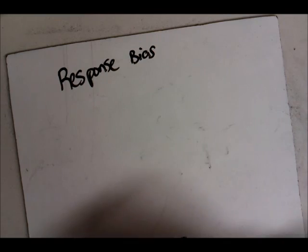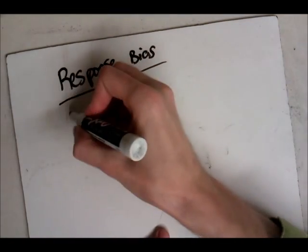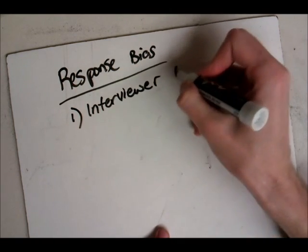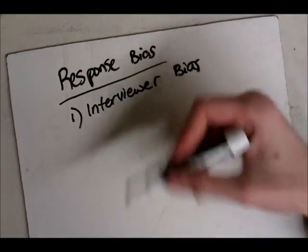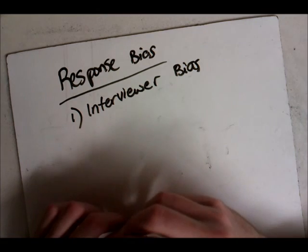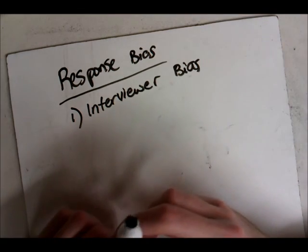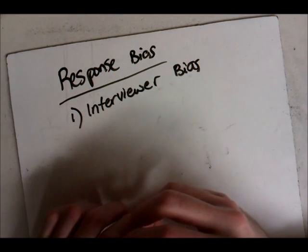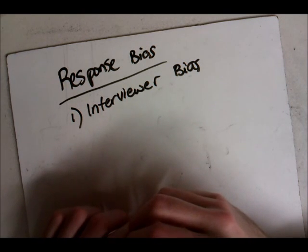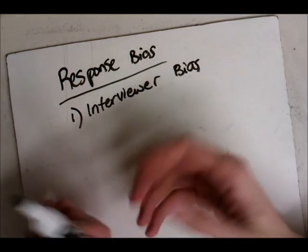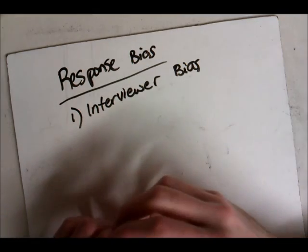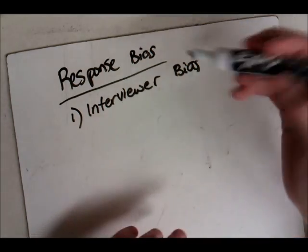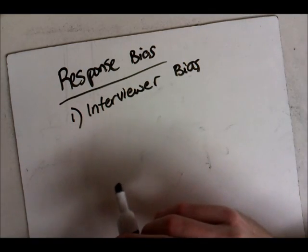Two of the biggest ones here would be interviewer bias. This is where the person who is giving the survey might cause the results to go one way or the other. For example, if your boyfriend or girlfriend is asking you, would you ever cheat on me? Well, obviously, you're probably not going to tell them yes, I'm going to cheat on you, because they'd probably dump you on the spot. So the person who asks the question, depending on who they are, that might influence how you vote one way or the other.